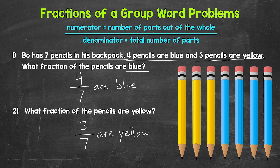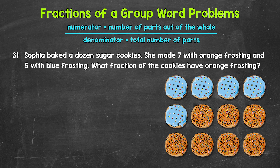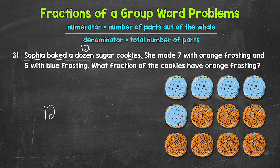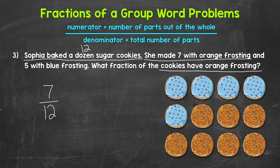Let's move on to number three. Sophia baked a dozen sugar cookies — remember, a dozen means 12. She made seven with orange frosting and five with blue frosting. What fraction of the cookies have orange frosting? The denominator is the total number of cookies: a dozen is 12, so 12 is our denominator. We're looking for the cookies with orange frosting — seven were made with orange frosting, so seven is our numerator. Seven out of 12 cookies have orange frosting. Our fraction is seven twelfths.